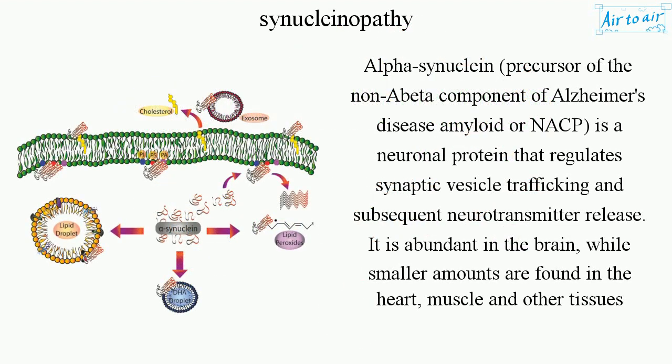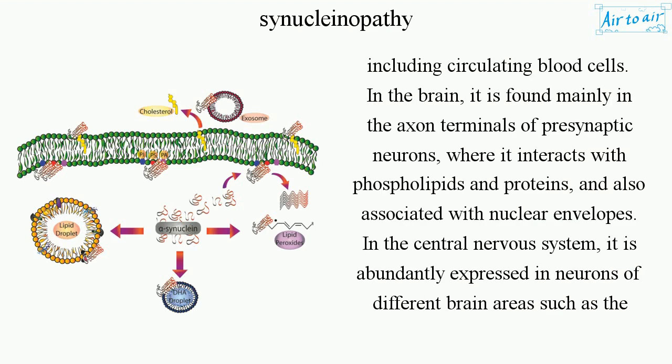Alpha-synuclein, precursor of the non-amyloid beta component of Alzheimer's disease amyloid (NACP), is a neuronal protein that regulates synaptic vesicle trafficking and subsequent neurotransmitter release. It is abundant in the brain, while smaller amounts are found in the heart, muscle, and other tissues including circulating blood cells.